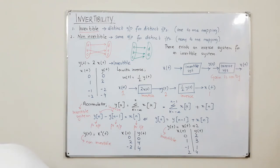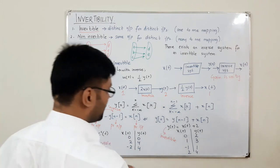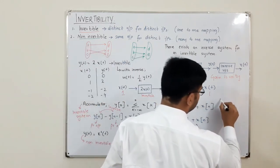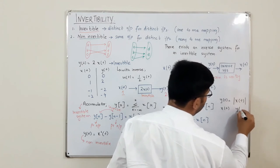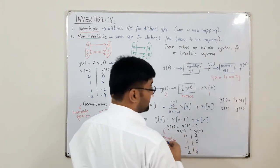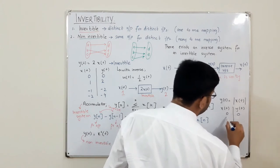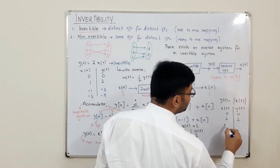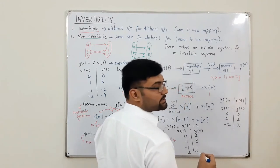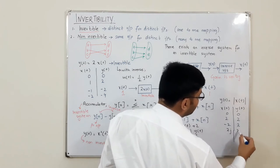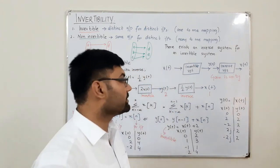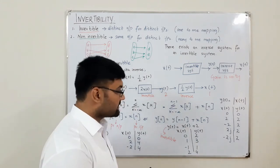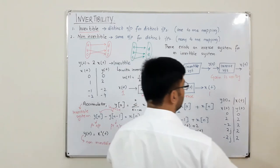Now consider y(t) = |x(t)|. Making a table: for x(t) = 0, y(t) = 0; for x(t) = 2, y(t) = 2; for x(t) = -2, y(t) = 2 again; for x(t) = 2j, |2j| = 2; for x(t) = -2j, the modulus is also 2. For different values of inputs we have the same value of output, which means this system is non-invertible.